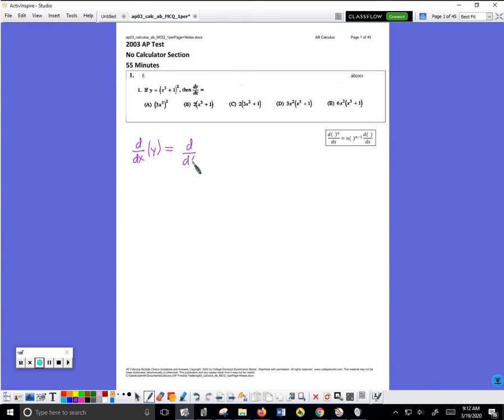So now I have the power rule because I have d/dx of something to a number. Notice the something over here as well, just no number here. So the something is x cubed plus 1, the number is 2.